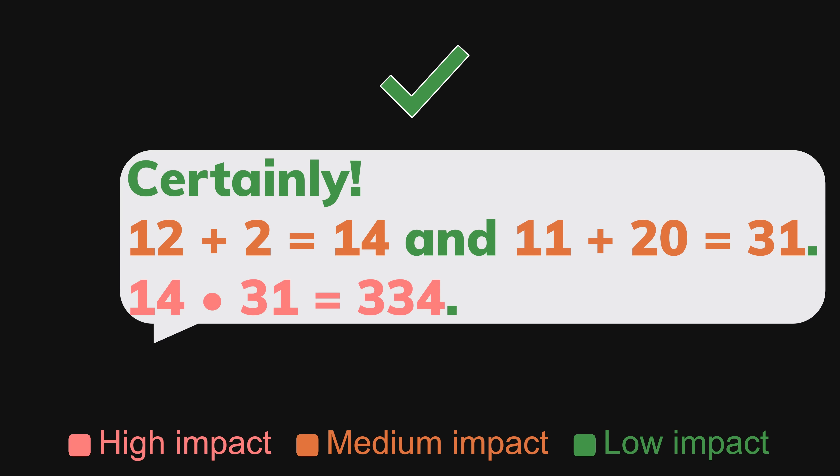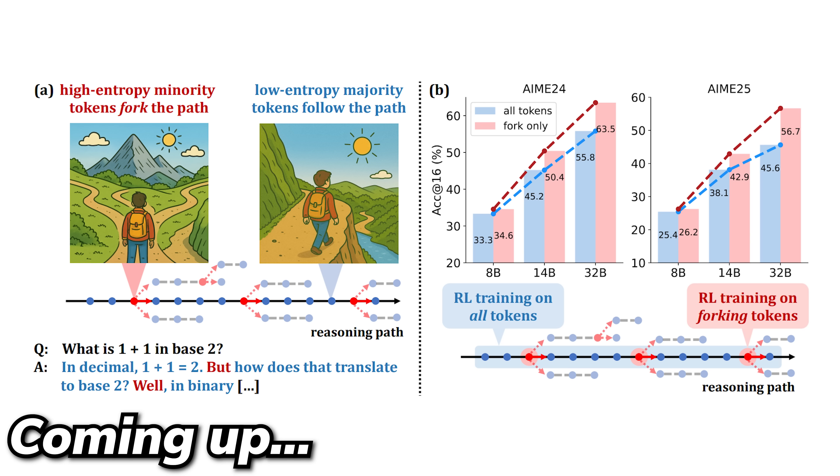The optimizer would need a way to spotlight the high-impact tokens where the model actually makes choices, instead of spreading gradients uniformly across boilerplate context. So the researchers use a pretty simple method — measuring the entropy.